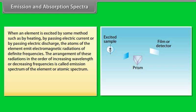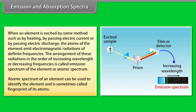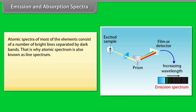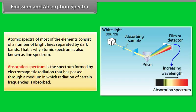Emission and absorption spectra: When an element is excited by heating, electric current, or electric discharge, its atoms emit electromagnetic radiations of definite frequencies. The arrangement of these radiations in order of increasing wavelength is called the emission spectrum or atomic spectrum of the element. Atomic spectrum can be used to identify the element and is called the fingerprint of its atoms. It consists of bright lines separated by dark bands — hence also called line spectrum. Absorption spectrum is formed by EM radiation that has passed through a medium where certain frequencies are absorbed.